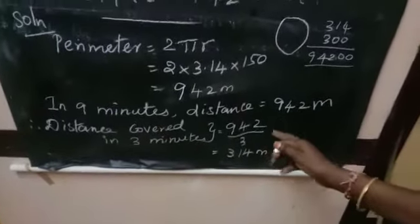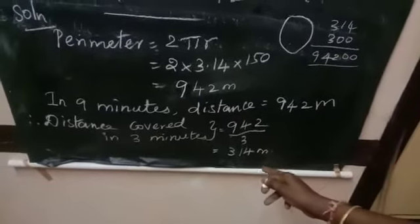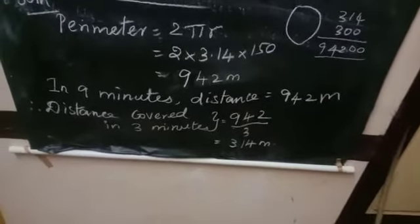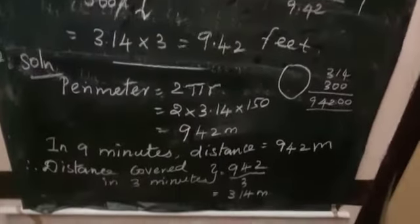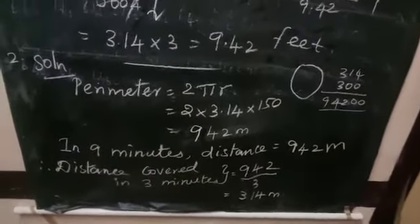So 942 divided by 3 equals 314 meters. The distance covered in 3 minutes by a person is 314 meters.